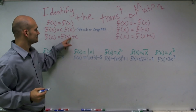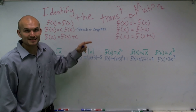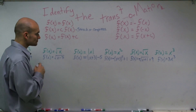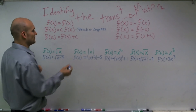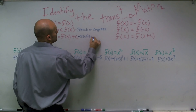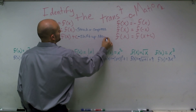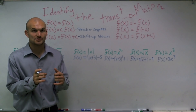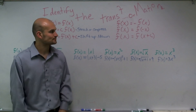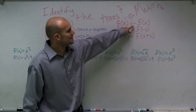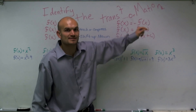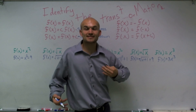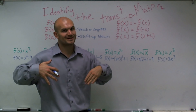When I add c outside the function — for example, f of x plus c — that's going to shift my graph up or down. For instance, if I have x squared and then add plus 1, I take the whole x squared graph and move it up 1. If I have a negative sign in front of my function — negative f of x — that's going to reflect my whole function over the x-axis.